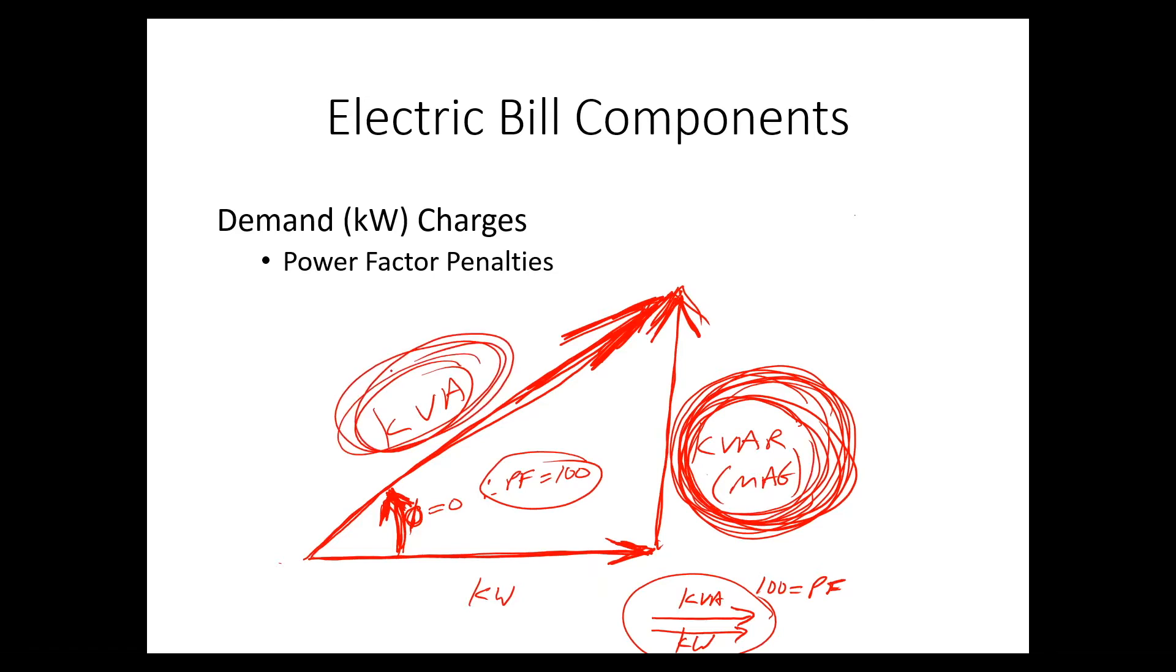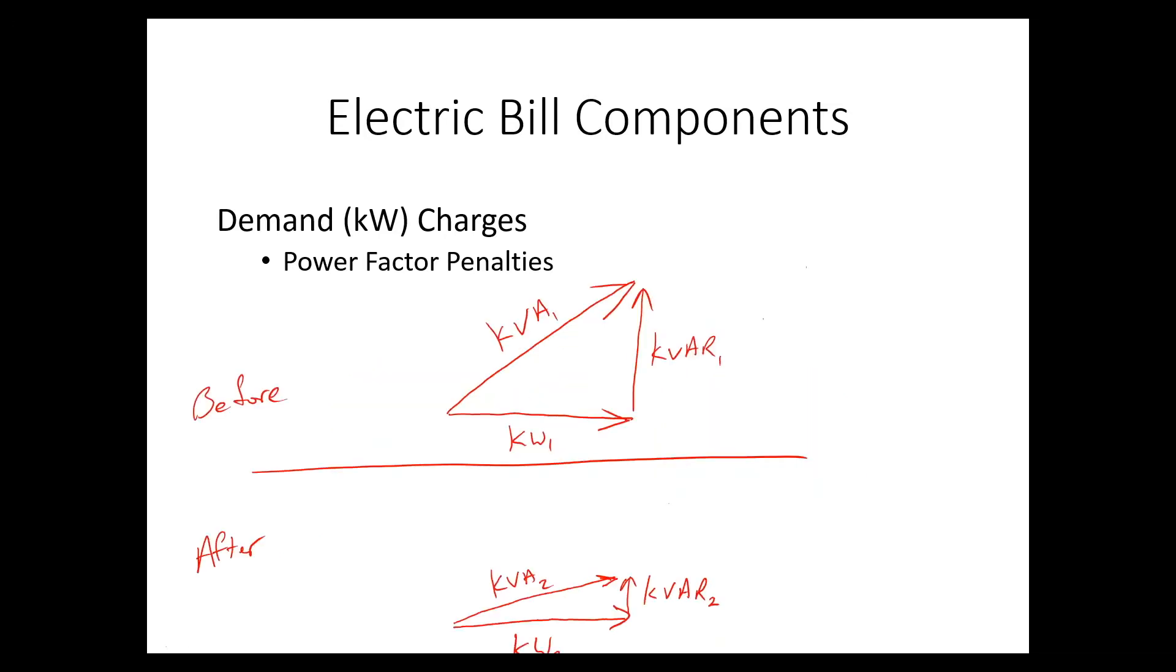Let's take a look at a couple of examples. Consider the before case, which is the diagram on top, and you have a situation where phi is not zero, your power factor is not 100%, let's just say it's around 70, okay, say power factor equals 70. The utility is having to provide a lot of KVA so that you can do a certain amount of work at KW.